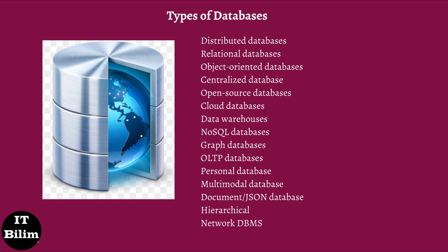NoSQL databases: A NoSQL database is used for large sets of distributed data. There are big data performance problems that are effectively handled beyond relational databases. This type of database is very efficient in analyzing large-size unstructured data. Graph databases: A graph-oriented database uses graph theory to store, map, and query relationships. These kinds of databases are mostly used for analyzing interconnections. For example, an organization can use a graph database to mine data about customers from social media.